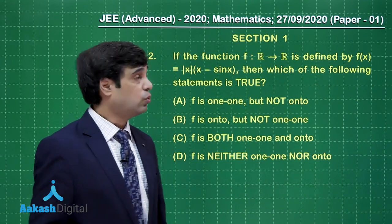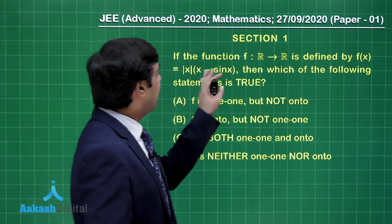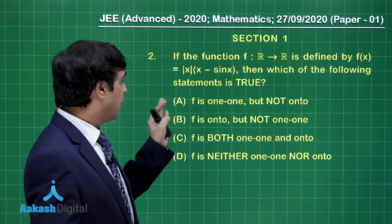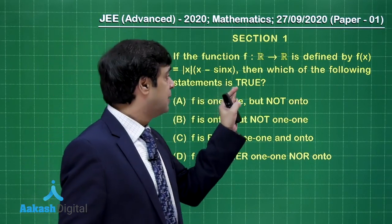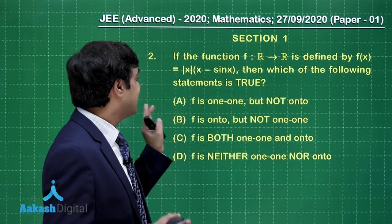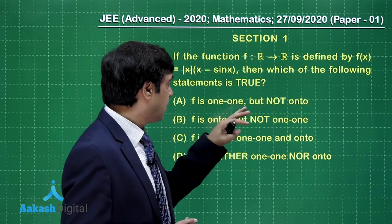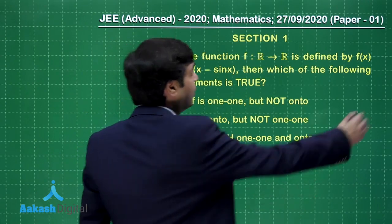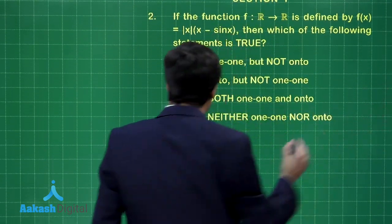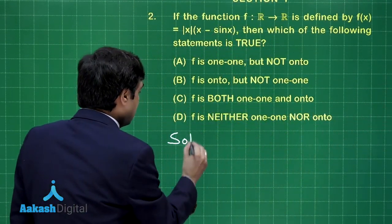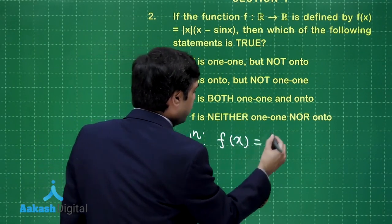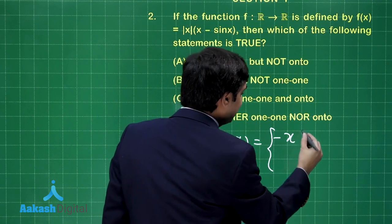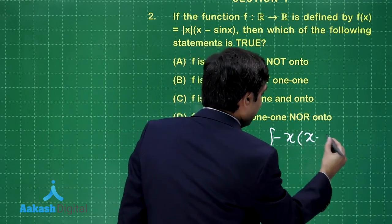Moving on to Question 2: If the function f from ℝ to ℝ is defined by f(x) = |x|(x − sin x), then which of the following statements is true? The question is asking about whether f is one-one and/or onto. Rewriting the given function: f(x) = −x(x − sin x) when x < 0, and x(x − sin x) when x ≥ 0.